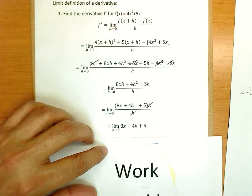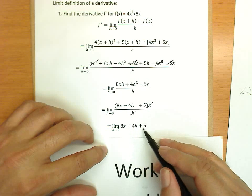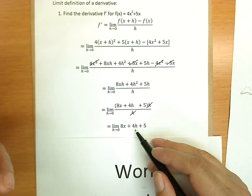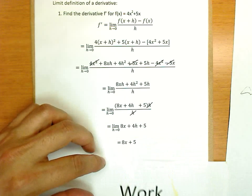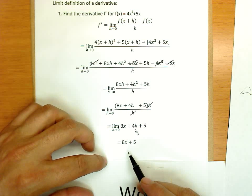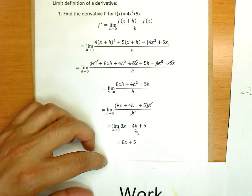So, now we have the limit as h goes to 0 of 8x + 4h + 5. Well, if h is going to 0, 4 times something that's going to 0 is also going to 0. So, we're simply going to let that actually go to 0. And we're left with 8x + 5 as our answer for the derivative for this problem. Thanks for paying attention.